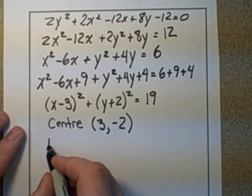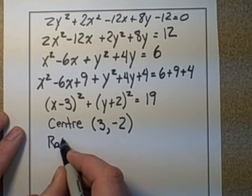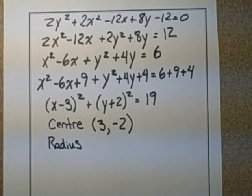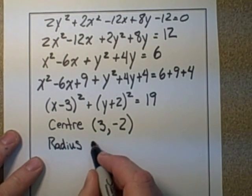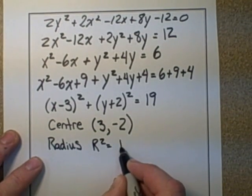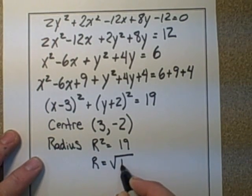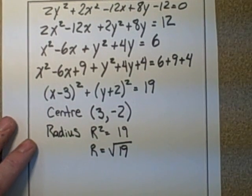And then the radius, that's simply going to be equal to r squared equaling 19. Work that out by rooting both sides. r is equal to the root of 19. And we'll just leave it in root form in this case here.